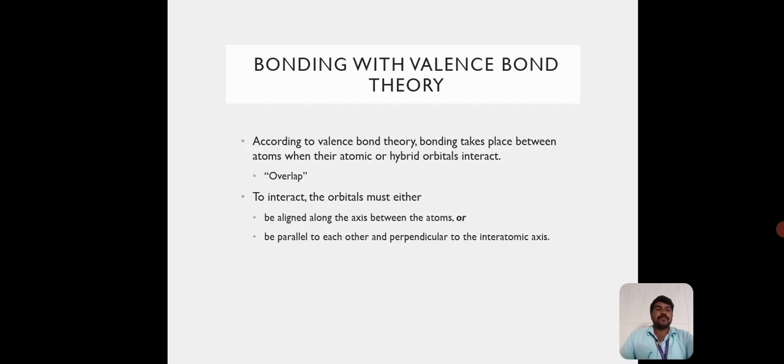Bonding with Valence Bond Theory. According to valence bond theory, bonding takes place between atoms when their atomic or hybrid orbitals interact. This is called overlap. To interact, the orbitals must either be aligned along the axis between the atoms or be parallel to each other and perpendicular to the interatomic axis.